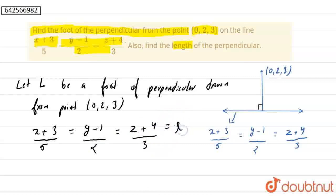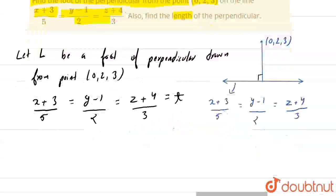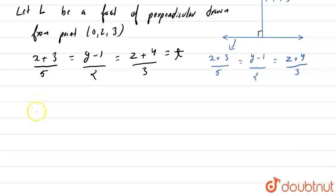Let it be equal to some variable t. So now we can write x = 5t - 3, y = 2t + 1, and z = 3t - 4.